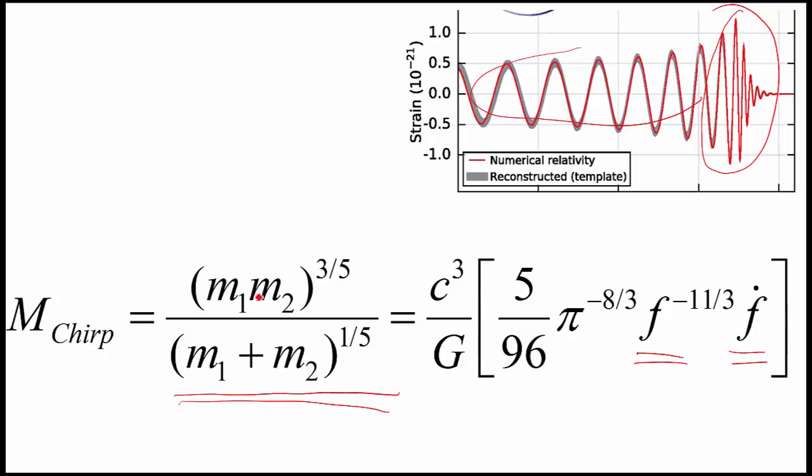Or it could be one thing that's very low mass, say one solar mass, another thing that's a thousand solar masses. So if it's two objects about the same mass they're going to be about 30 solar masses each. If it's one that's less massive, the other one has to be very much more massive to make up for it.